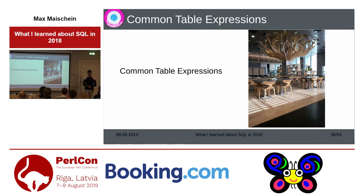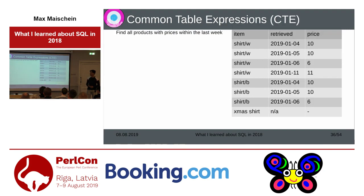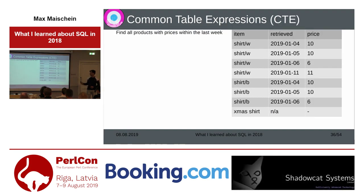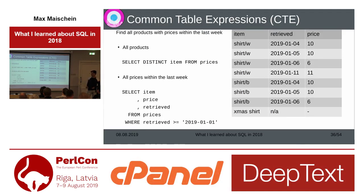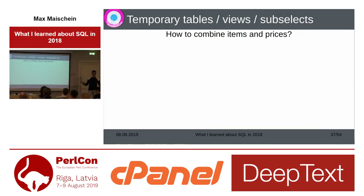Let's look at the second part of the talk: common table expressions. Say I want to look at my price data and find all products which have prices within the last week, and also all products that didn't have a price last week — maybe because my scraper is broken. Finding all products is easy: SELECT DISTINCT item FROM prices. And finding all prices within the last week is also easy: SELECT item, price, retrieved FROM prices WHERE retrieved > start of 2019.